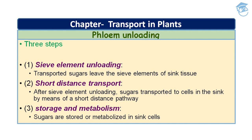The third step is storage and metabolism: sugars are stored or metabolized in the cells of the sink. As with phloem loading, sucrose unloading also occurs through the symplast via plasmodesmata or through the apoplast at some point en route to the sink cell. Phloem unloading is typically symplastic in growing or respiring sinks such as meristems, roots, and young leaves where sucrose can be rapidly metabolized. Young leaves act as a sink until their photosynthetic machinery is fully developed, at which point they become sources.